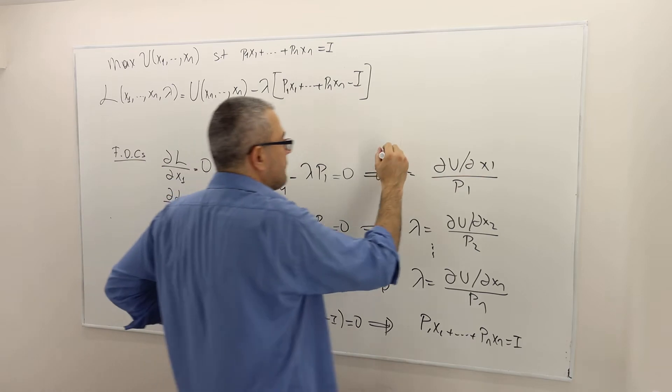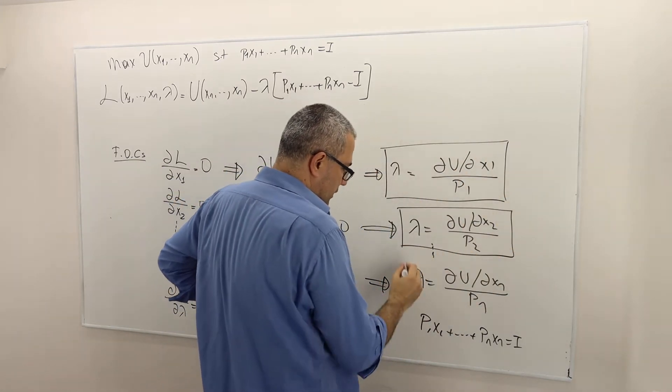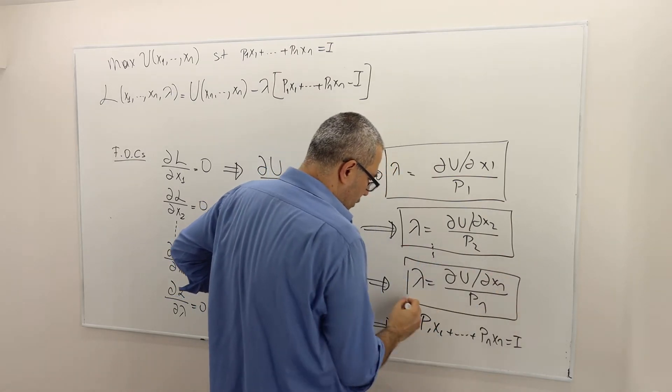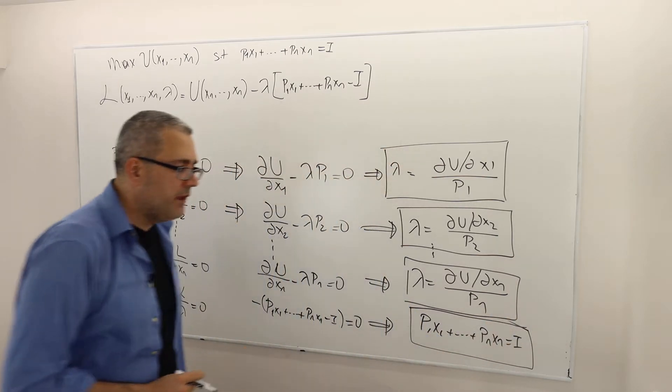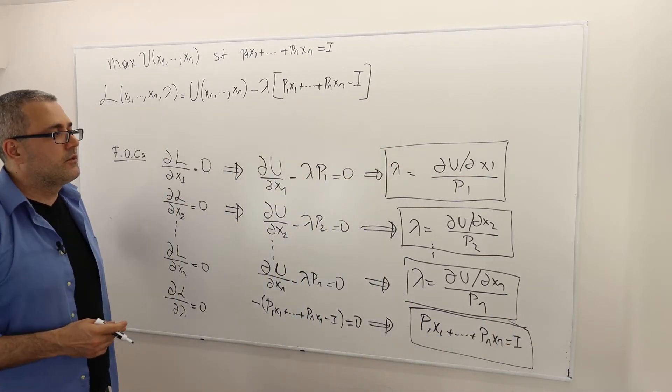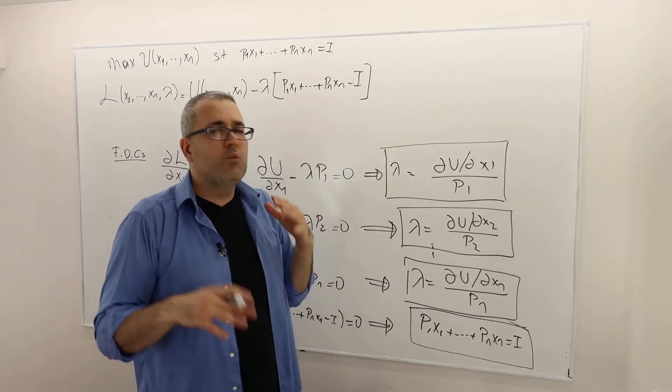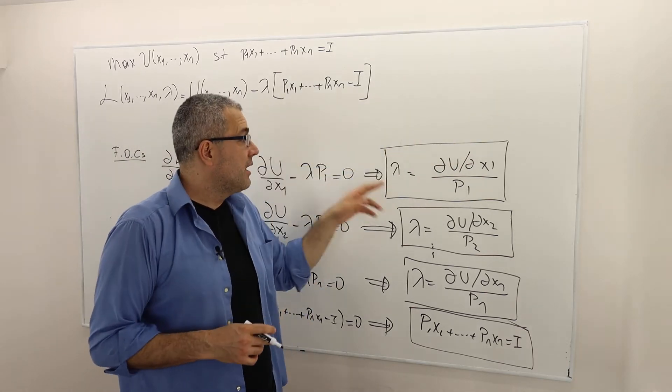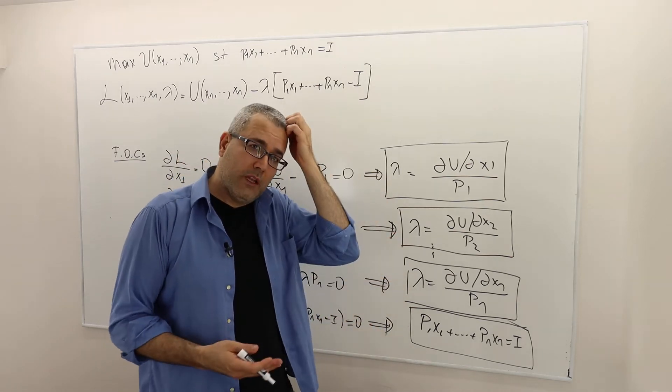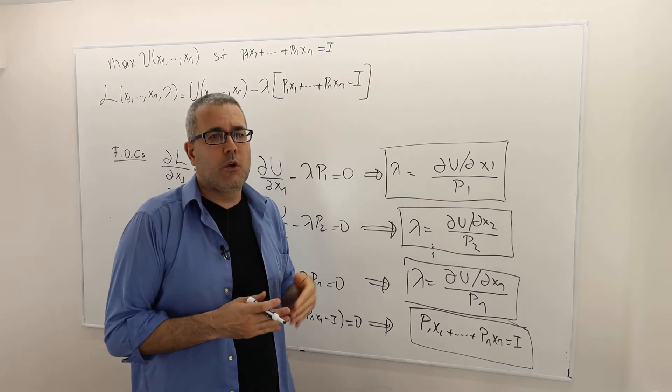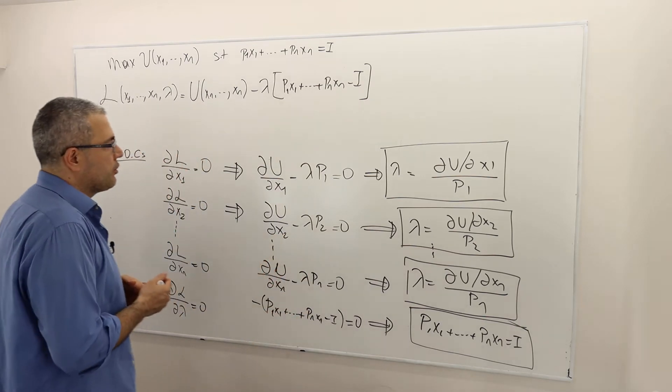So therefore, I have n plus 1 equalities and n plus 1 unknowns. I can solve this system of equations. Well, obviously, it is not so easy unless those del u del xis are simple terms. But without knowing the utility function, I cannot go further. I cannot solve this question. But normally, we know how to solve n plus 1 equations with n plus 1 unknowns. At least the solution should exist.